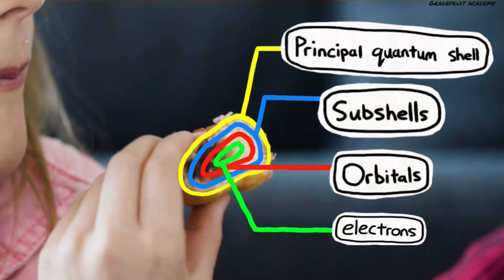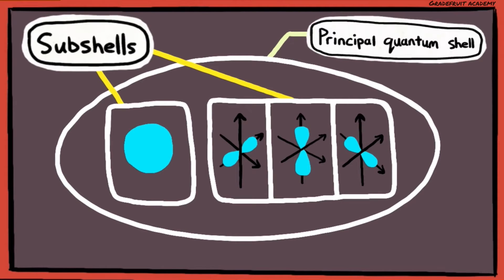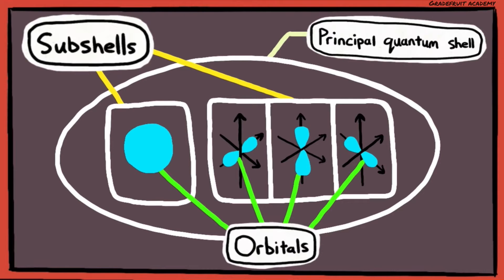Or, you can imagine it to be like this, where this is the principal quantum shell, and within it are containers which are called subshells, and within these containers, there will be different types of orbitals which contain electrons.